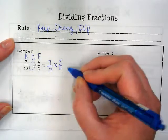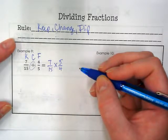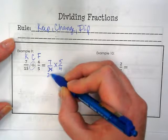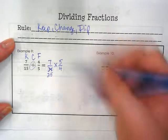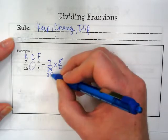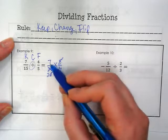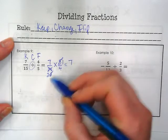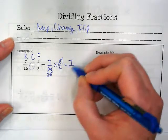And thinking about yesterday's lesson where we were reducing before we multiplied, if I change this into 3 times 5 it still equals 15, but now I can cancel out the 5s. 7 times the invisible 1 here would be 7. 3 times 4 would be 12.